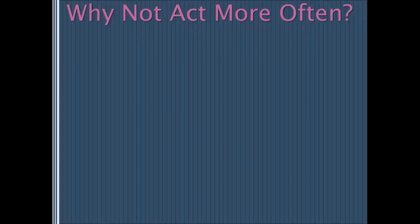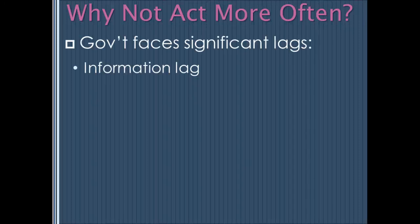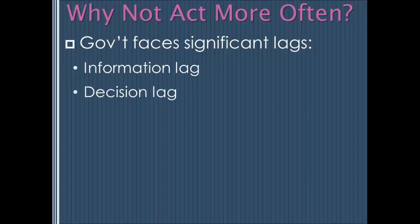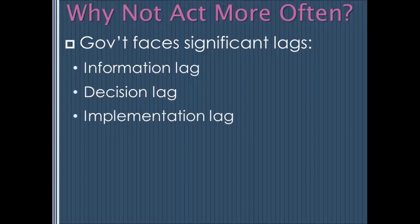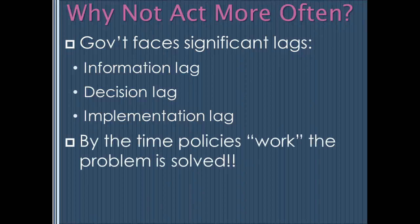Why doesn't the government act more often? One reason is that the government faces significant lags. They don't even know we're in a recession until we're already there, and they don't know we're out of one until we're already out. It takes a long time to make a decision — Congress has a tendency toward dysfunction and disagreement. And it takes a long time to implement: programs need to be funded, people hired, and the rollout managed. By the time policies actually work, the economy has often already solved its own problem, so the government won't react to every small twitch in the economy.